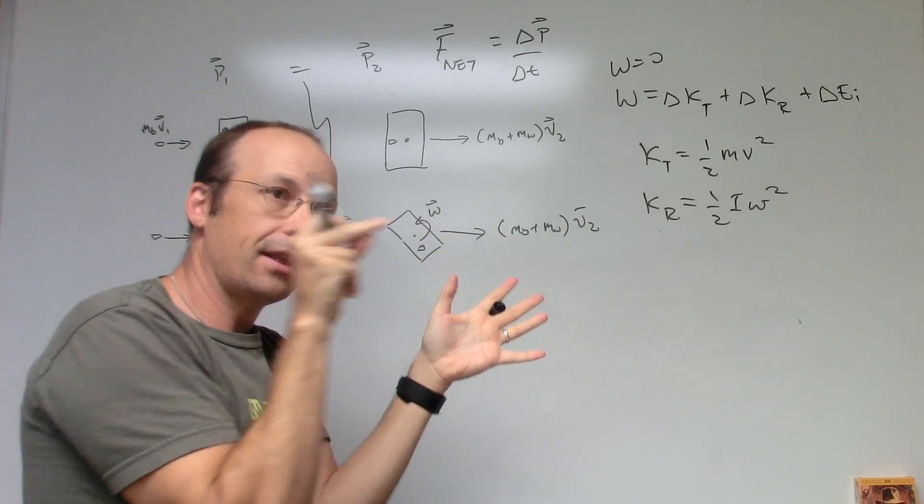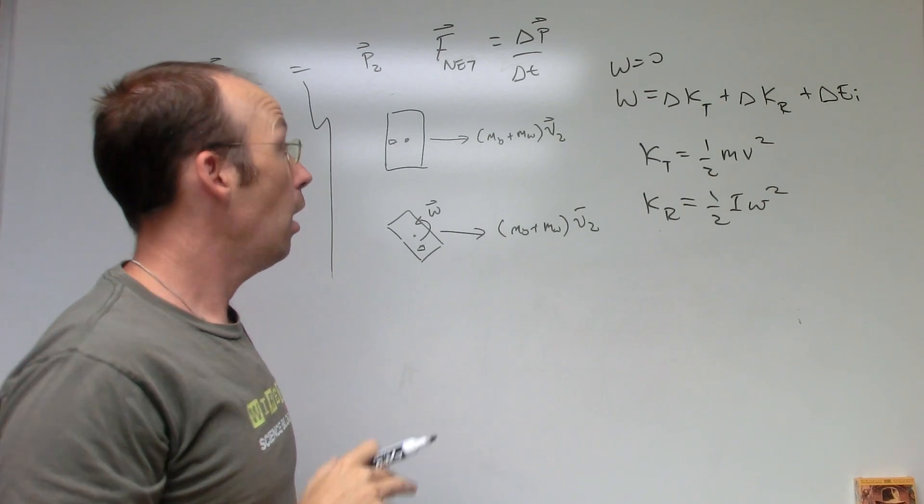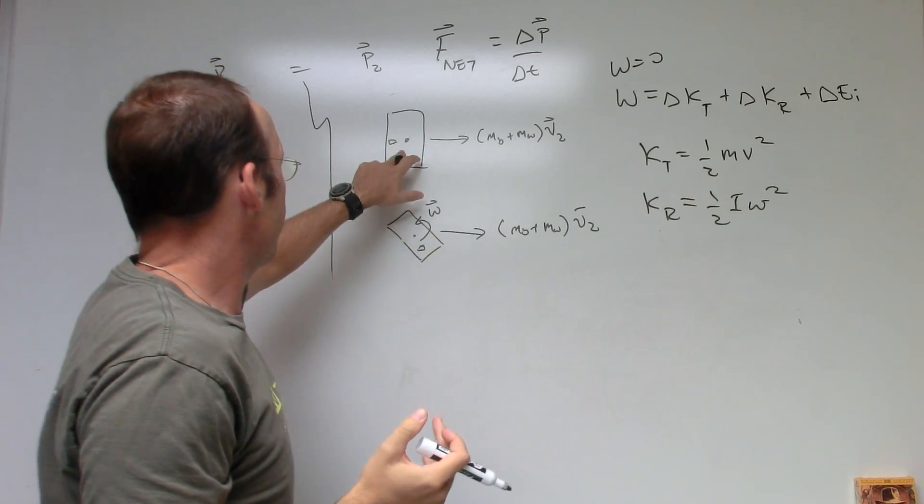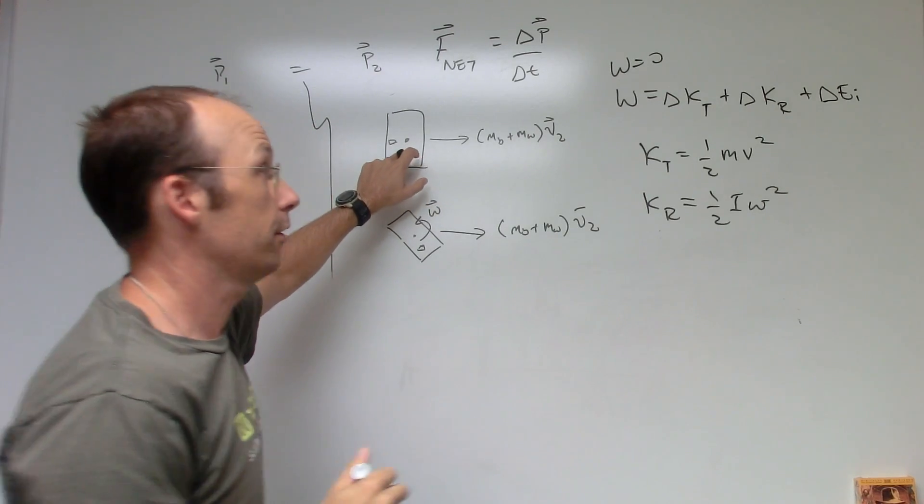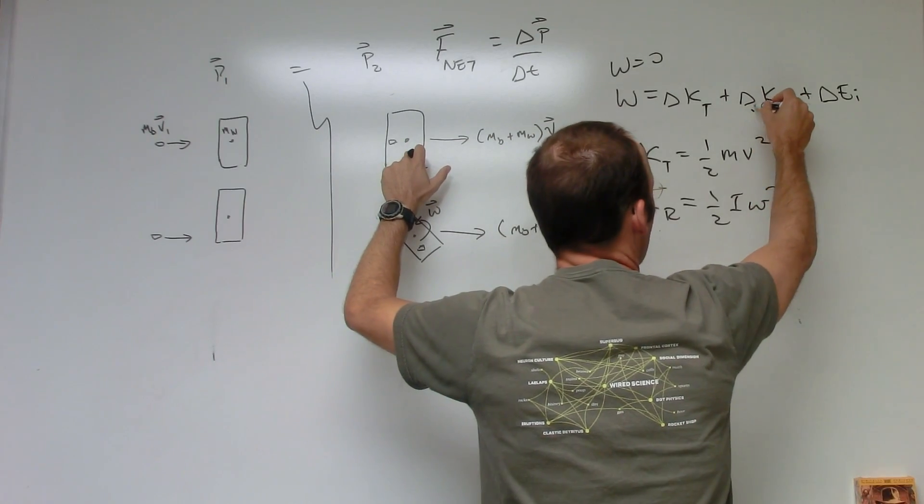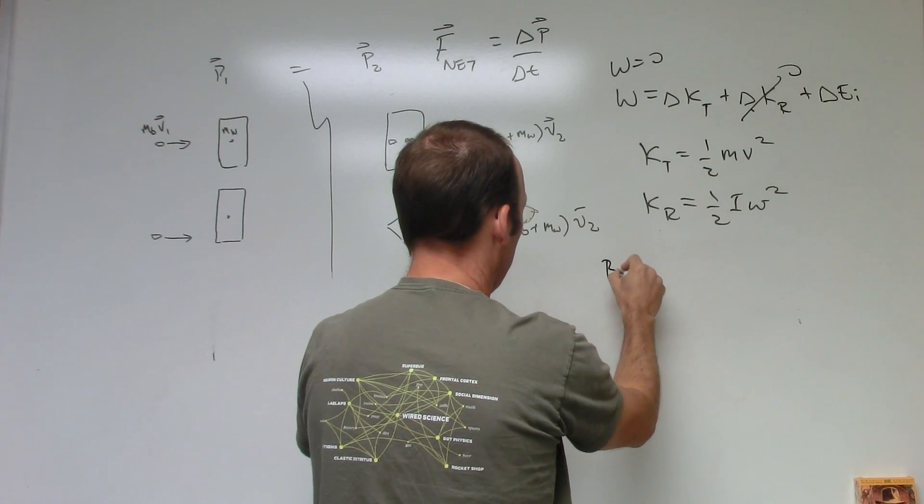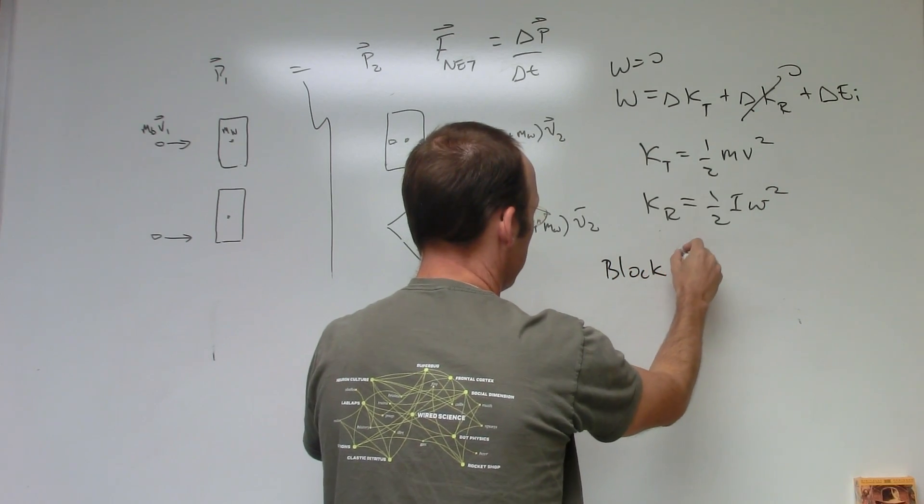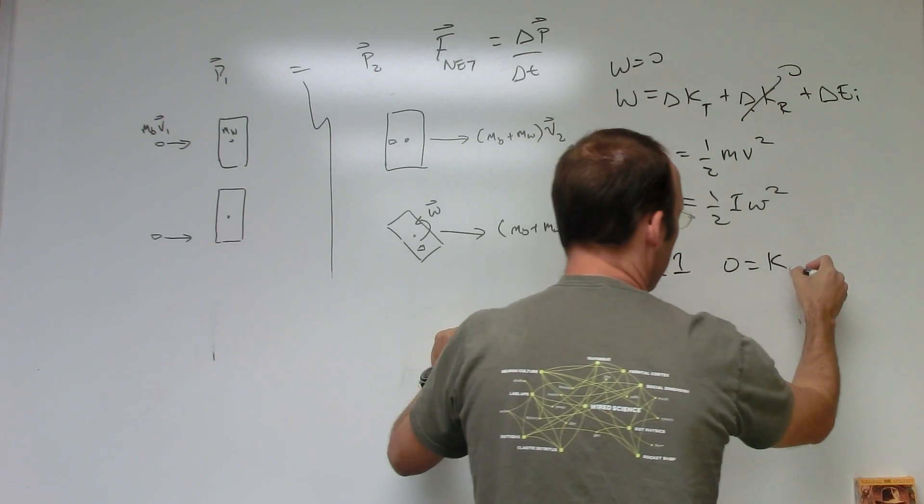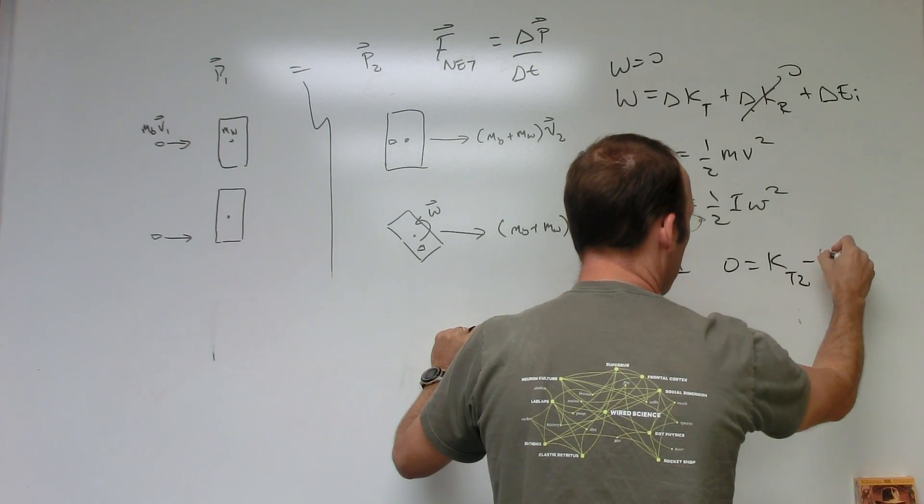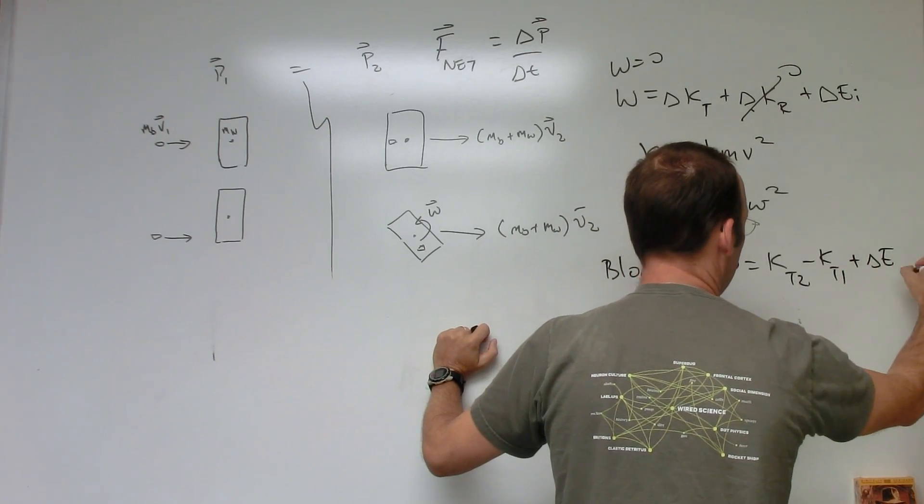So for the first block, it starts off with angular velocity of zero, ends up with angular velocity of zero. So this term is zero. So for the first block, let me just write this as block one.